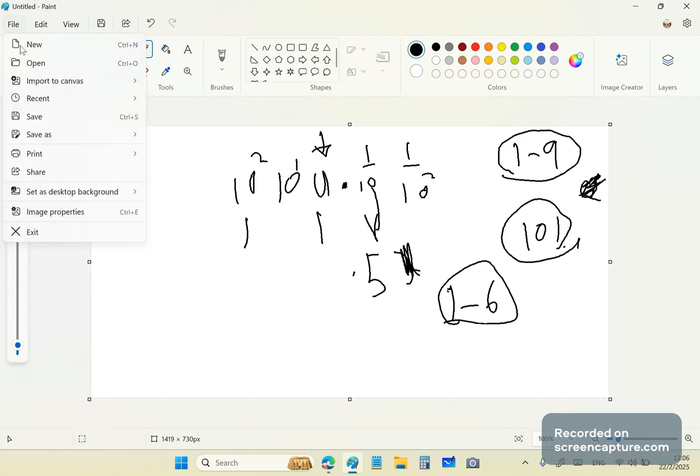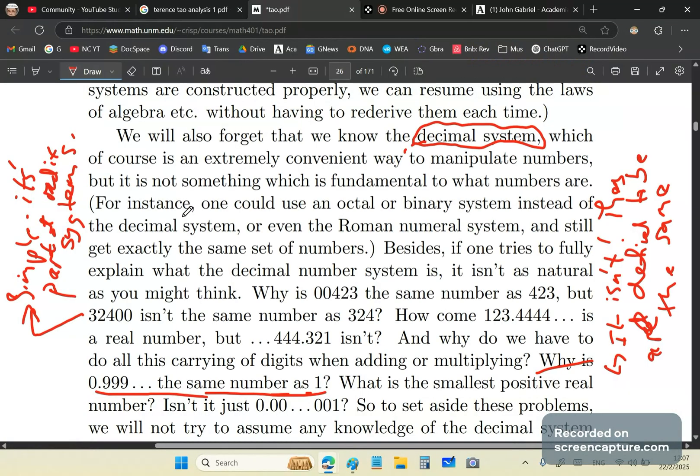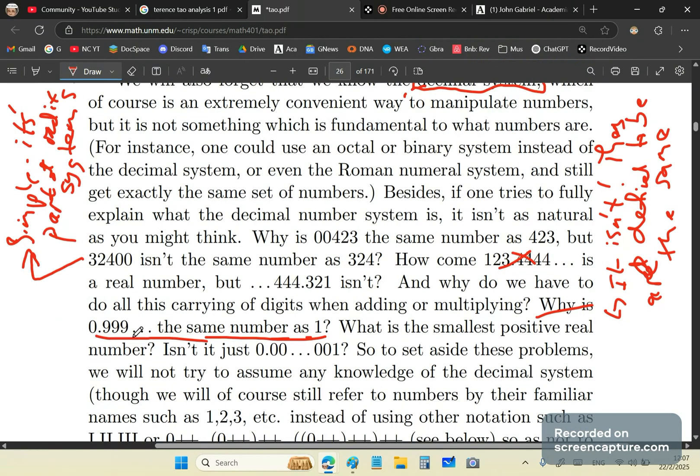And then he says, why is it that 00423 is the same as 423, but 324 isn't the same number? Well, 324 isn't the same number because it's not in the same order for starters. So order matters when you write these things down, at least in the very first place, it matters. Secondly, it matters under what column you write the digits. And he says, how come this is a real number, but 444.321 isn't? Absolute BS, by the way. And he says, why is 0.999 the same as 1? Well, it isn't the same as 1. It's defined to be the same as 1, incorrectly, I might add.